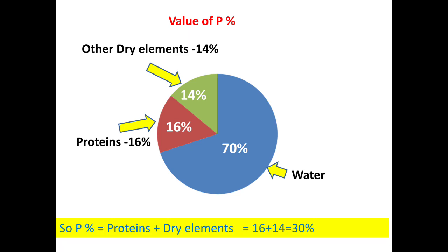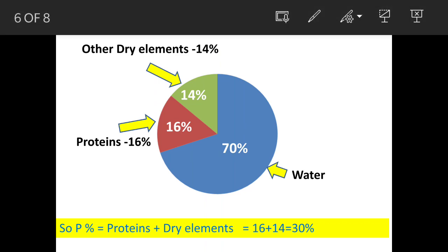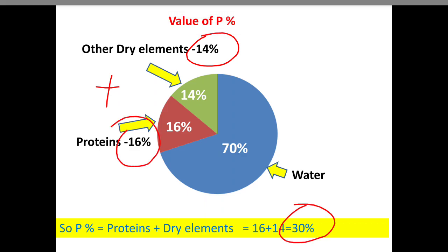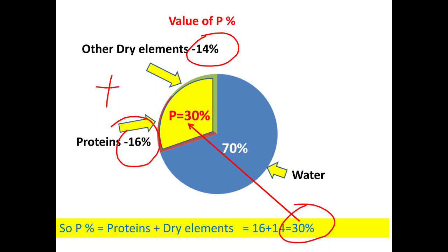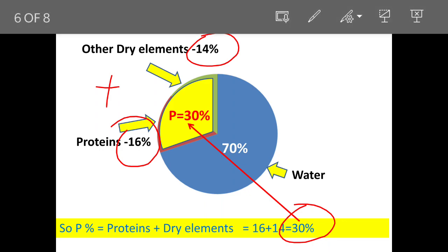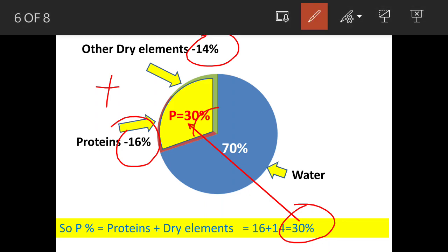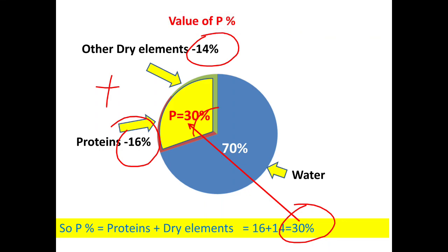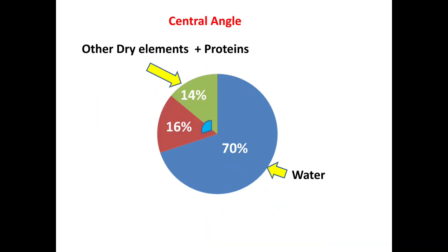Now P% will be values of dry elements and proteins that is 16% plus 14%, which is 30%. So this is what is the value of P%. Now the question is what is this angle? So we will now find out the angle.